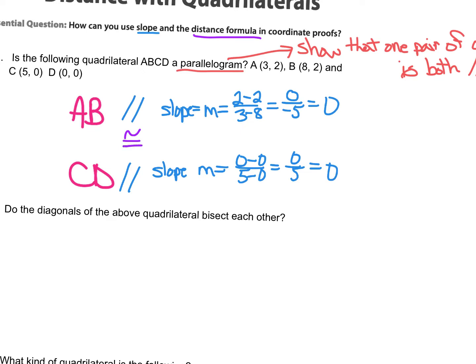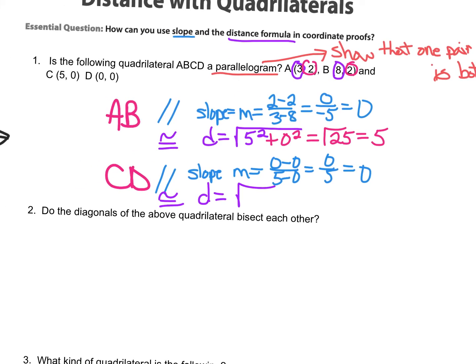So CD, the slope, Y minus Y is 0 minus 0, and X minus X is 0 over 5, which is 0. So those two lines are parallel, and we could see that from the picture. Now, congruent, we're going to use distance formula. And distance, I'm going to say, what's the distance between these X's? And that's 5. And the distance between the Y's is 0. Which is the square root of 25, which is 5.